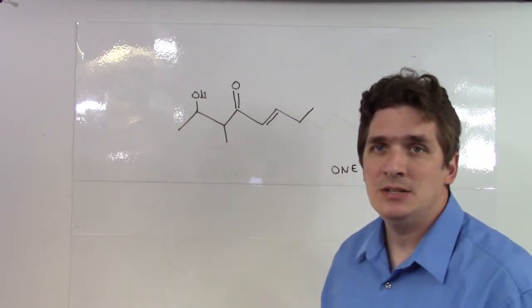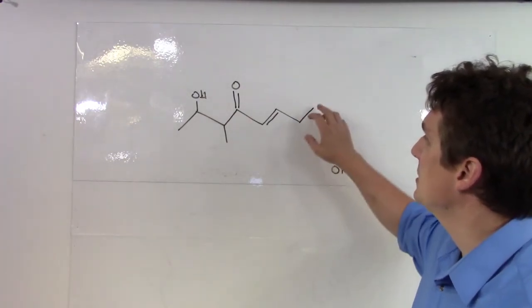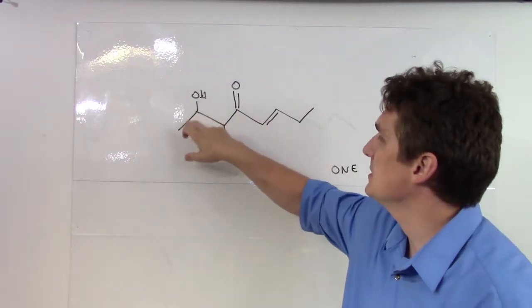Now the ketone here needs to be on the longest carbon chain. So here I've got eight carbons. One, two, three, four, five, six, seven, eight.